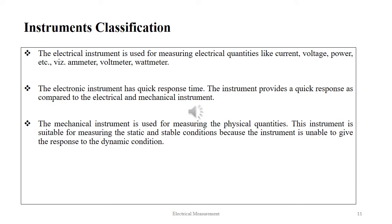The electrical instrument is used for measuring electrical parameters like current, voltage and power. For example, ammeter, voltmeter and wattmeter are electrical instruments. The electronic instrument has quick response time — it provides a quicker response as compared to the electrical and mechanical instrument. Digital voltmeter and CRO are examples of electronic instruments. The mechanical instrument is used for measuring physical quantities and is suitable for measuring static and stable conditions, because it is unable to respond to dynamic conditions.